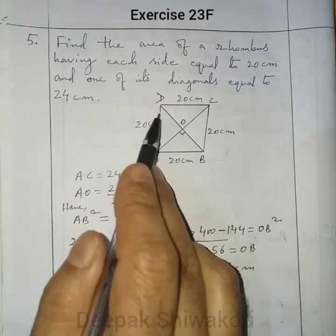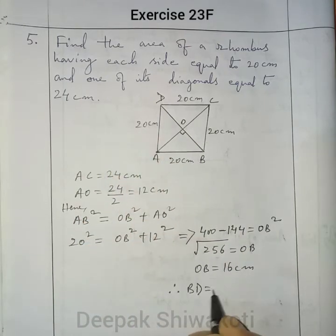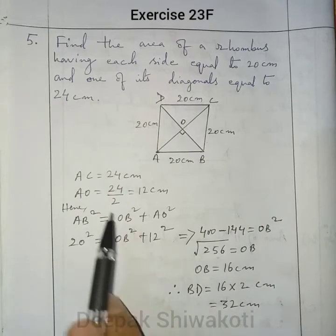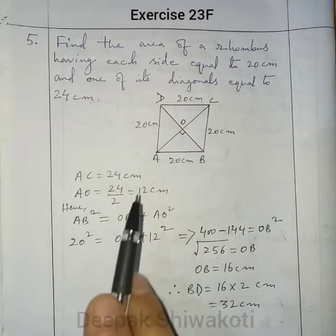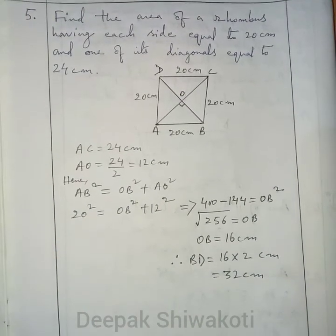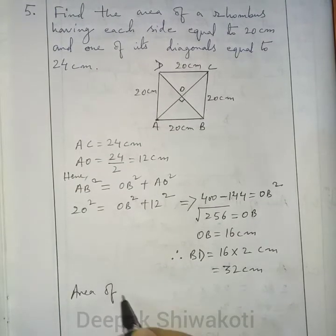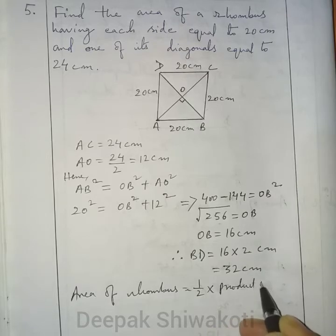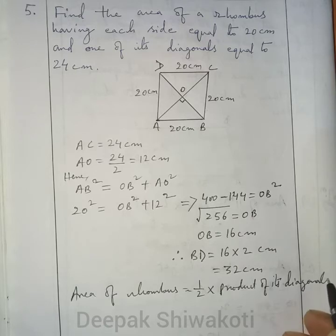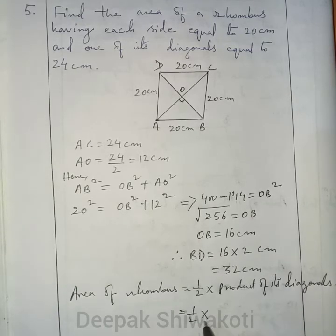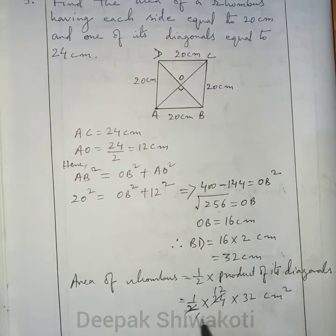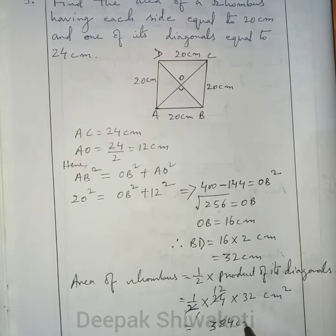Double of OB is the length of BD. Therefore, BD equals 16 into 2, that is 32 centimeter. Now we have the length of both diagonals AC and BD. So we can find the area of this rhombus. Area of rhombus equals half into product of its diagonals. So here, half into 24 into 32 centimeter square. That gives us 384 centimeter square.